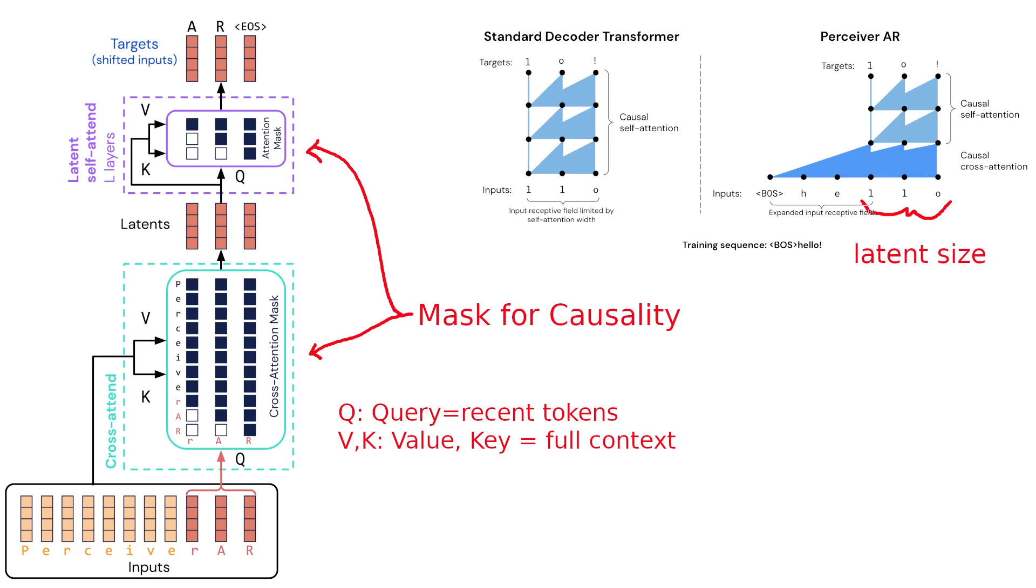Because it uses cross-attention in the first layer and then self-attention in all the following layers, the overall computation does only depend to a very small extent on the full size of the input. It mainly just depends on the latent size.